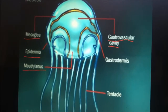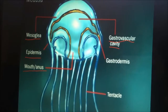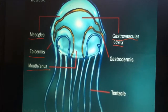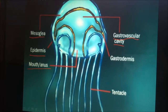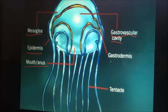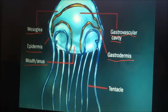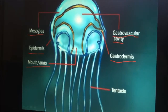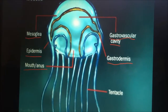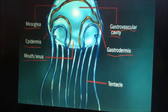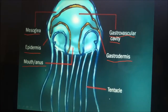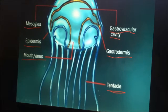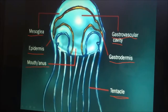The gastrovascular cavity is on the inside of the mouth, and the bell is covered with nematocysts, which are stinging organs. That's where they sting their prey, and if you step on one, it stings you, so don't touch it because it will hurt.